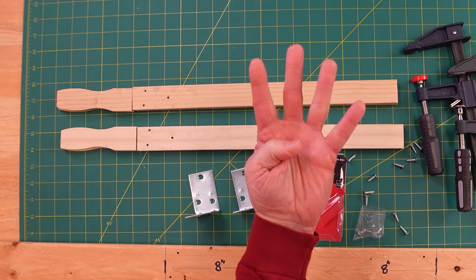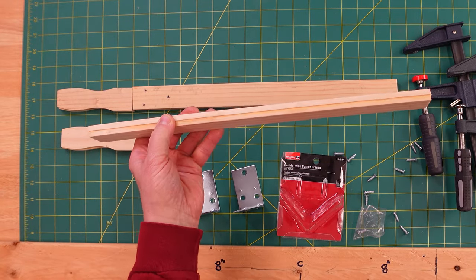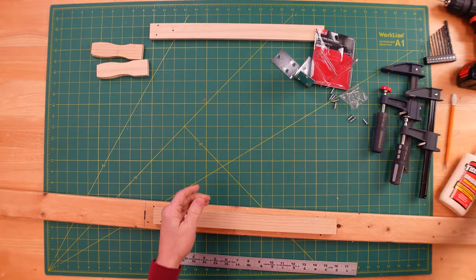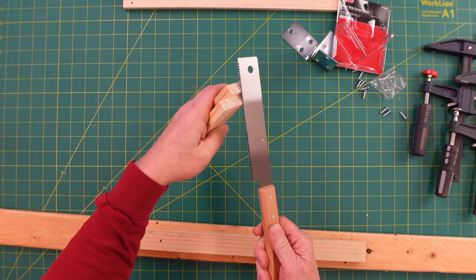Then you have a total of four paint stirrers, the big ones. I doubled them up and glued them and then I cut them off at 16 inches. I've got a great saw here for cutting these up.